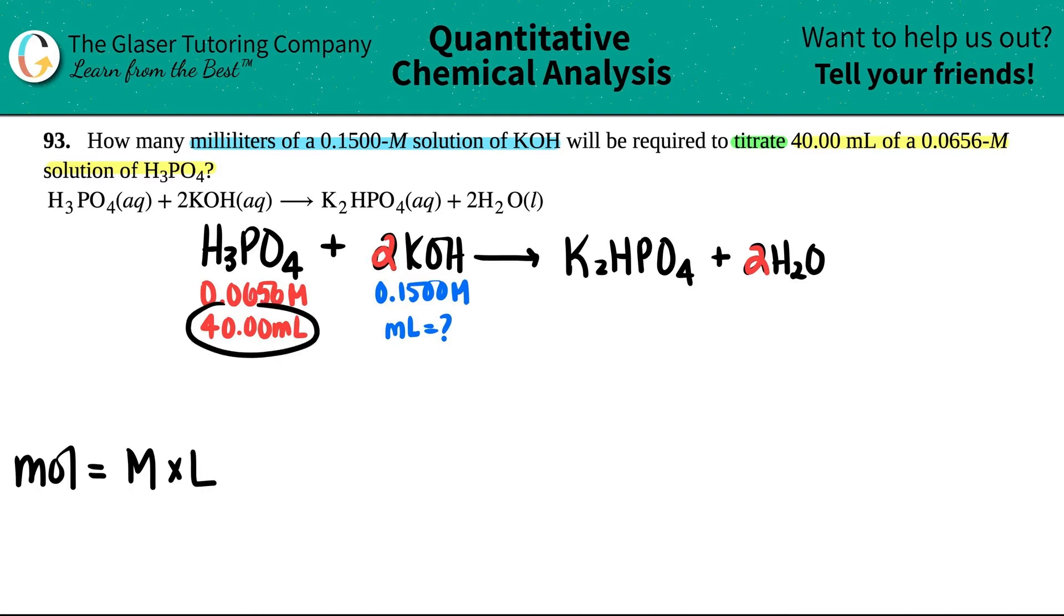But they gave me mils, so the first thing I have to do is convert this into liters. We can always do that by just dividing by a thousand. So 40 divided by a thousand, you can move the decimal place over to the left three times, that's going to be 0.0400 if you want to keep the sig figs.